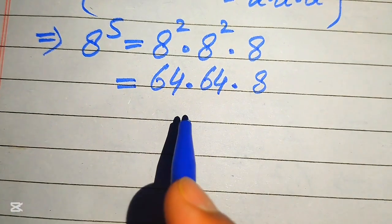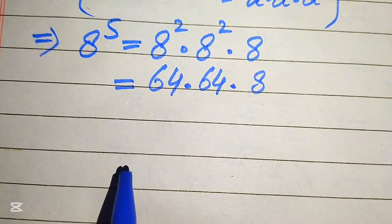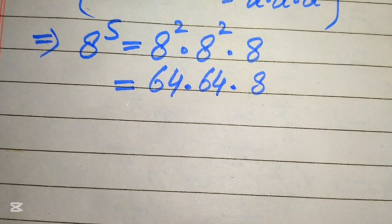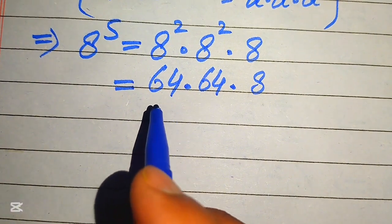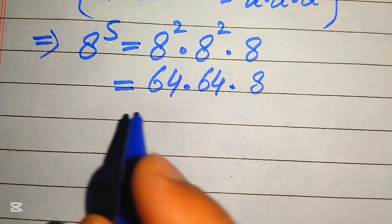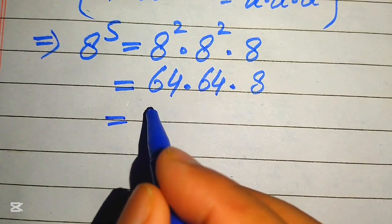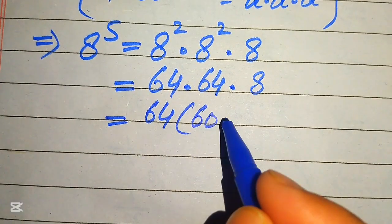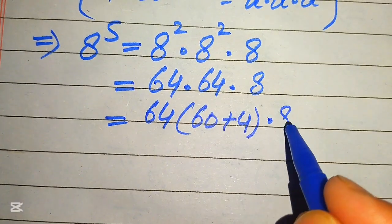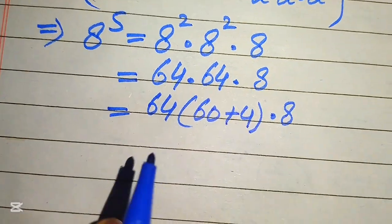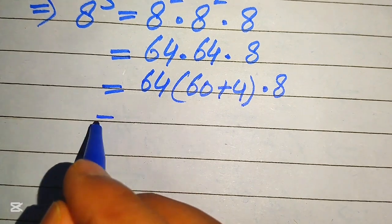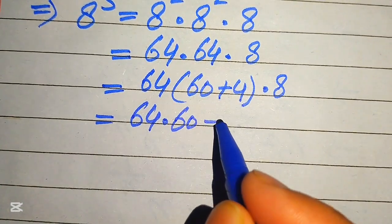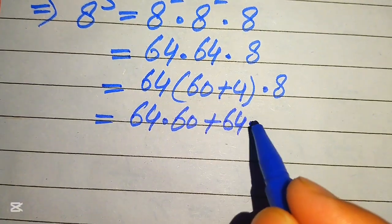Here is a smart method to multiply these larger numbers without a calculator. We break 64 into 60 plus 4, then multiply 64 by this result and finally multiply by 8. This gives us 64 times 60 plus 64 times 4, with the result multiplied by 8.